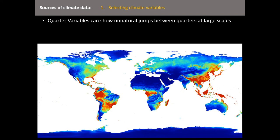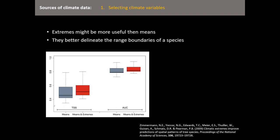It might also be more useful to look at extreme variables rather than just means. Extremes usually work slightly better for species distribution models because they give a better idea of where species range boundaries are. As the saying goes: if you stand on a hot plate with one foot and a freezing plate with the other, you're fine on average — but one foot is still burning and one is freezing. The same applies to means: you actually want a better representation of the range, so it makes sense to consider extremes as well.